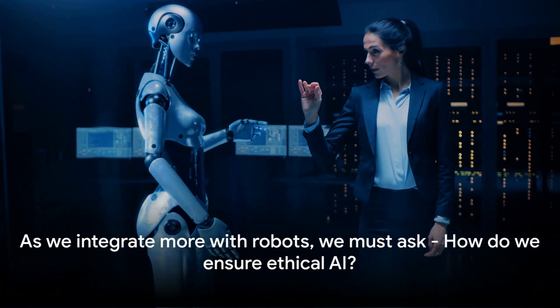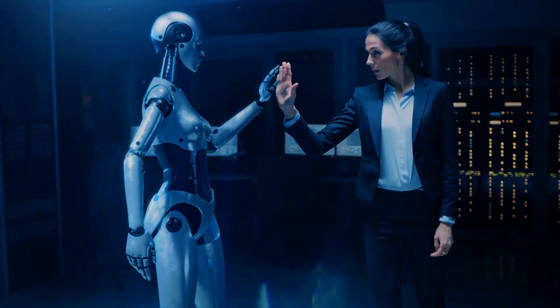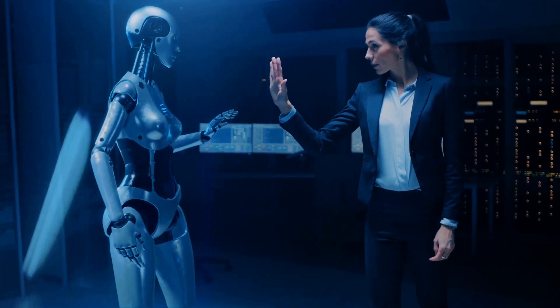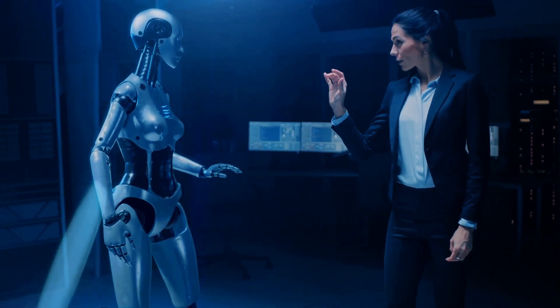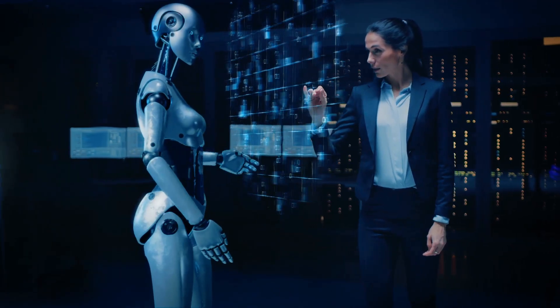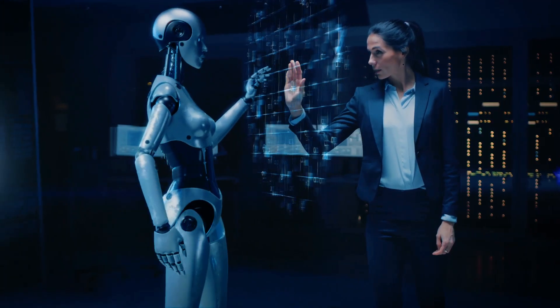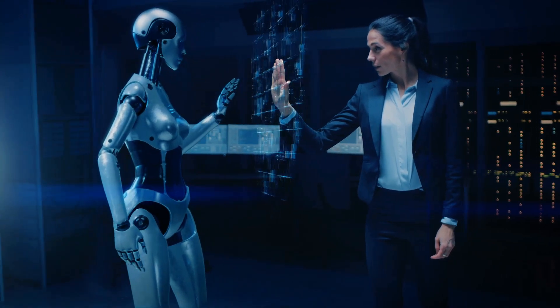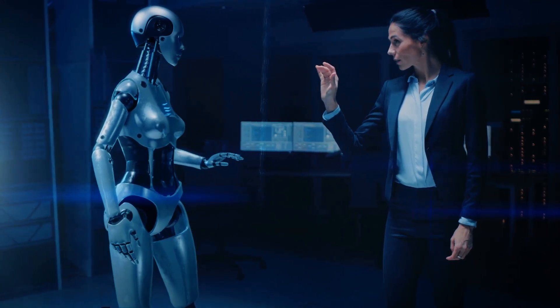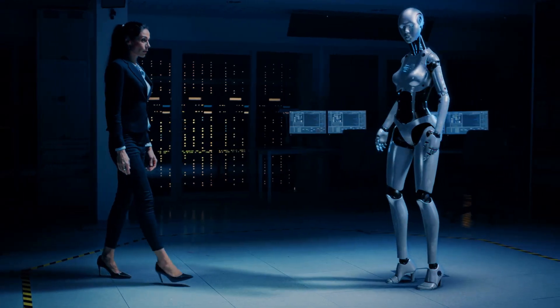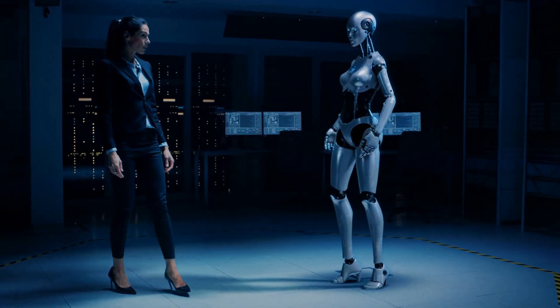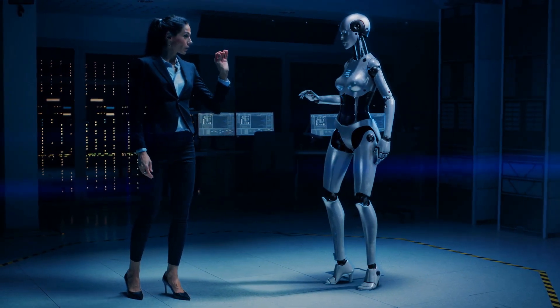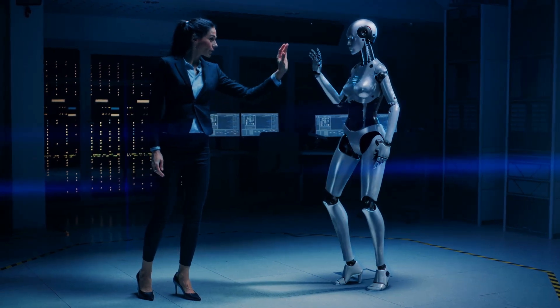As we integrate more with robots, we must ask, how do we ensure ethical AI? The emergence of artificial intelligence and robotics is not just a technological phenomenon, it's a societal shift that demands a thorough examination of ethical implications. As robots become more sophisticated, the line between machine and human interaction is blurring. And with this, arises a crucial question, how do we ensure the ethical use of AI? To answer this, we need to delve into the ethical considerations that come with the rise of AI and robotics.